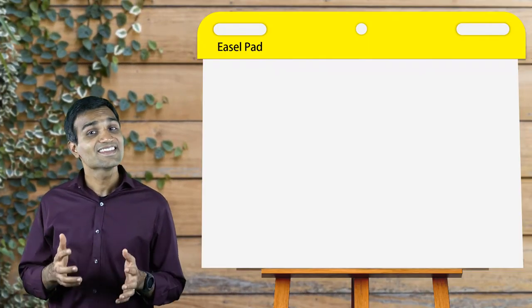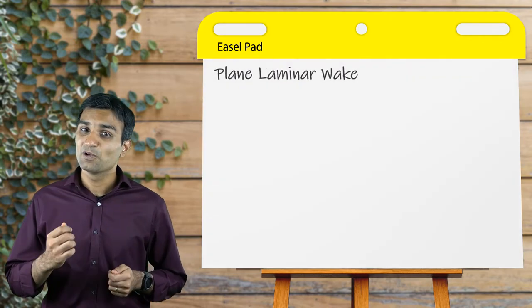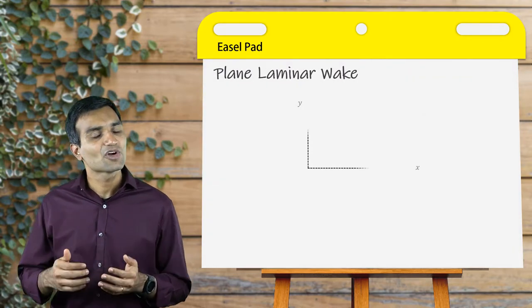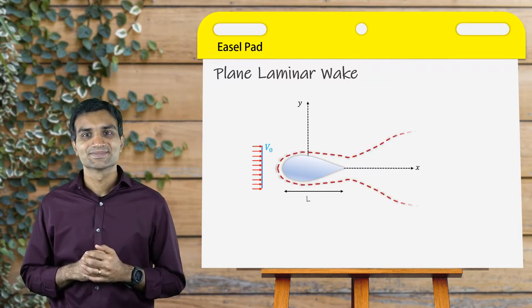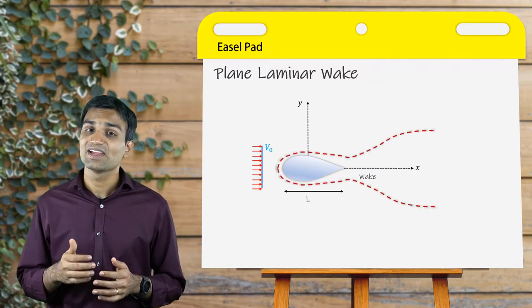In this lesson, we will learn about both these wakes and estimate their velocity profiles. In some sense, a wake is a velocity defect in the free stream velocity and occurs due to boundary layer separation. This defect is given by delta U.